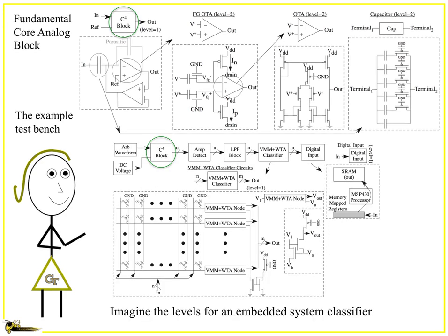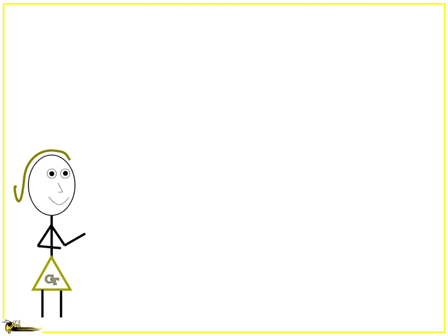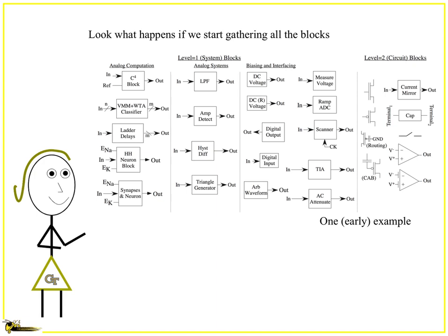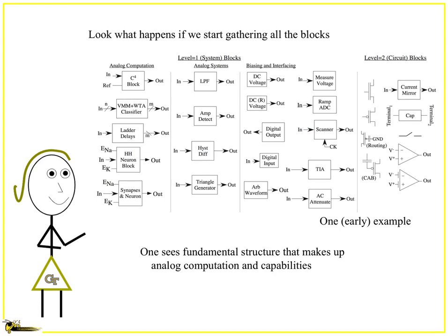Try doing a system-level classifier and it can get quite exciting and interesting. If you gather all the blocks together and start doing this over many applications, you find there are levels between computing, the system blocks, and biasing blocks. This is just one early example — there's a lot more complex stuff that is starting to be understood and regressed down, giving you a fundamental structure that tells you what the computation of the key blocks might be.